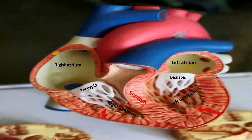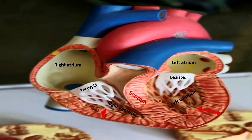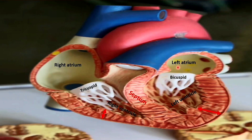Here we can see a miniature model of the human heart, which is considered the pumping organ. The heart is separated into two chambers — the left chamber and the right chamber — separated by a wall called the septum. The left part of the heart consists of oxygenated blood, whereas the right part consists of deoxygenated blood. The oxygenated and deoxygenated blood are kept separately because of the septum.